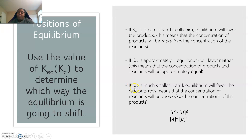For the third case, if the equilibrium constant is smaller than 1, then equilibrium is going to favor the reactants. Looking at the equation, if you have a bigger number on the bottom, that means you're going to have a number smaller than 1. So the reactant concentration is going to be bigger than the product concentration, meaning equilibrium favors the reactants.